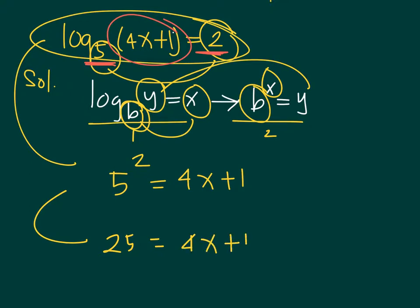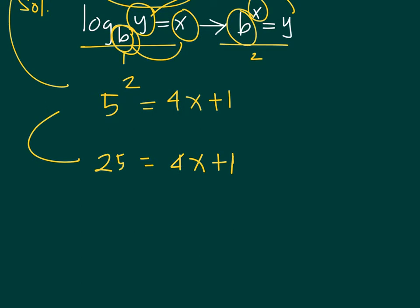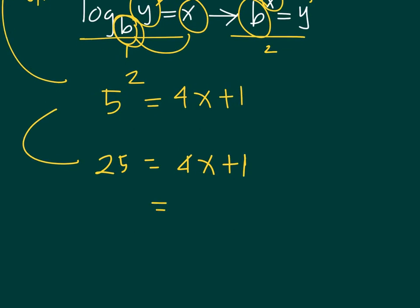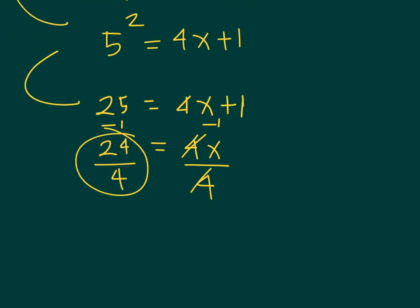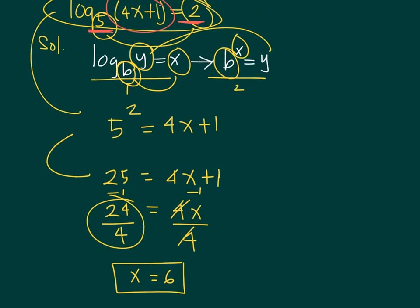Continuing the solution: 25 = 4x+1. Subtracting 1 from both sides gives 4x = 24. Dividing both sides by 4, x equals 6. This is a possible solution.